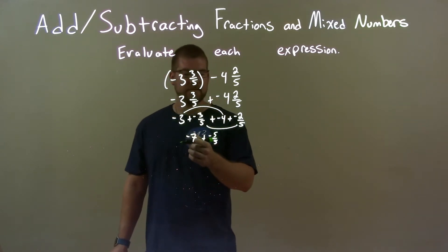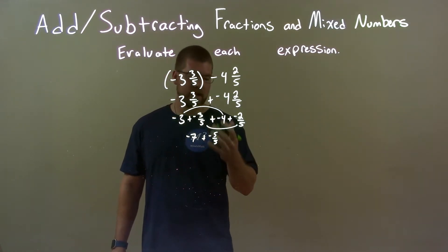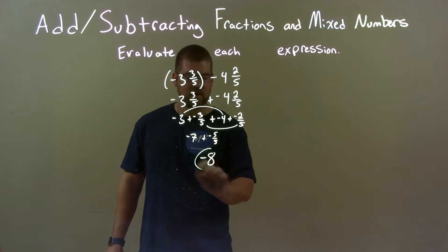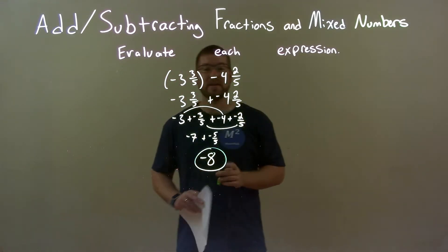So negative 7 plus a negative 5 over 5 or negative 1 is a negative 8. And so our final answer here is just negative 8.